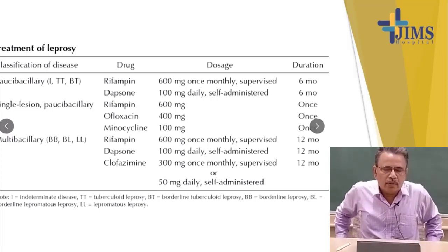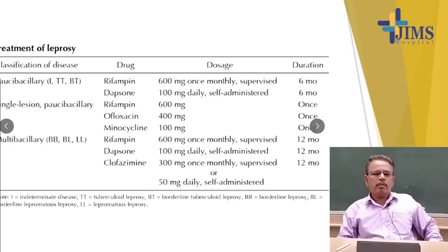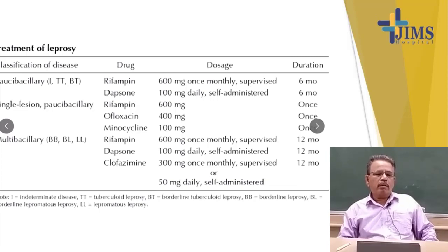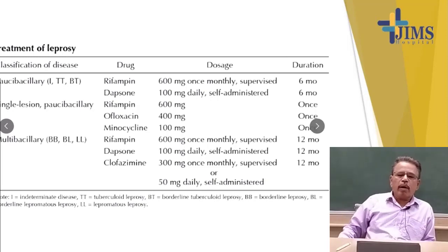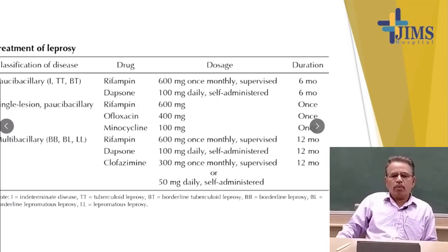The treatment of leprosy is categorized into paucibacillary, multibacillary, and single lesion. Paucibacillary means there are lesions in the skin or nerves affecting the limbs, mouth, nose, and nerves, but when we check the biopsy or smear, the Mycobacterium leprae will be absent. So absence of Mycobacterium leprae but lesions present is called paucibacillary. Multibacillary means the lesion may be one, but the bacteria will be seen under the microscope. That is called multibacillary, and the treatment also varies.